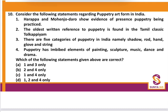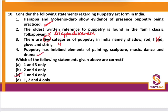Consider the following statements regarding puppetry art form in India. Harappa and Mohenjo Daro show evidence of puppetry being practiced — correct. The oldest written reference to puppetry is found in Tamil classic Silpadi Karam, not Tolkappiyam. There are 4 categories of puppetry in India — shadow, rod, hand/glove, and string — not 5, since hand and glove are the same category. Puppetry has imbibed elements of painting, sculpture, music, dance, and drama — correct. So statements 1 and 4 are correct, making option C the answer.